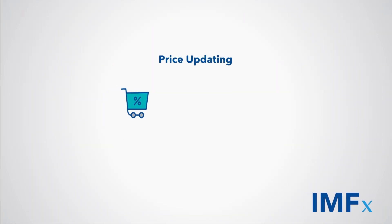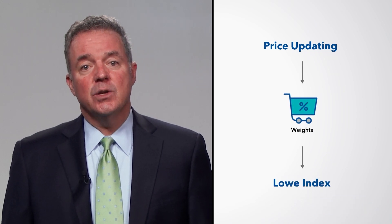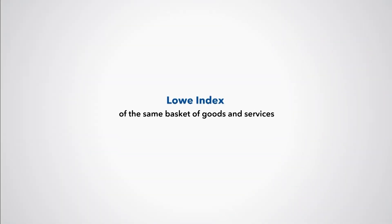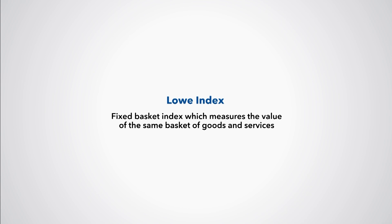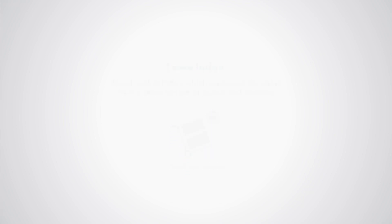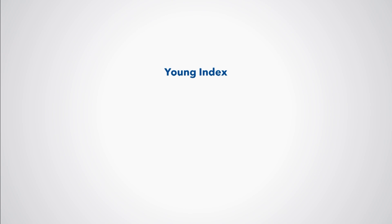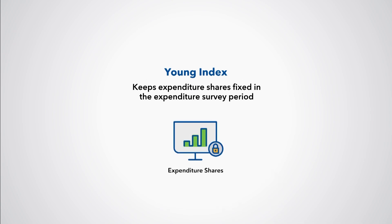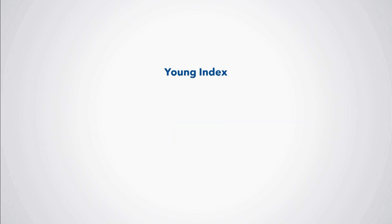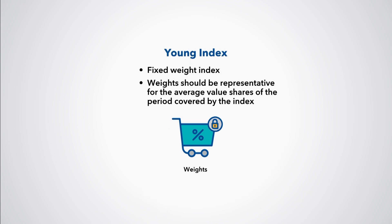By price updating, the weights are aligned to the same reference period as the prices. If the NSO decides to price update the weights, the resulting index will be a Lowe index. The Lowe index is a fixed basket index which, from period to period, measures the value of the same annual basket of goods and services. Not price updating the weights results in the calculation of a Young index. The Young index keeps the expenditure shares fixed in the expenditure survey period. The Young index is a fixed weight index, where the weights should be as representative as possible for the average value shares of the period covered by the index.